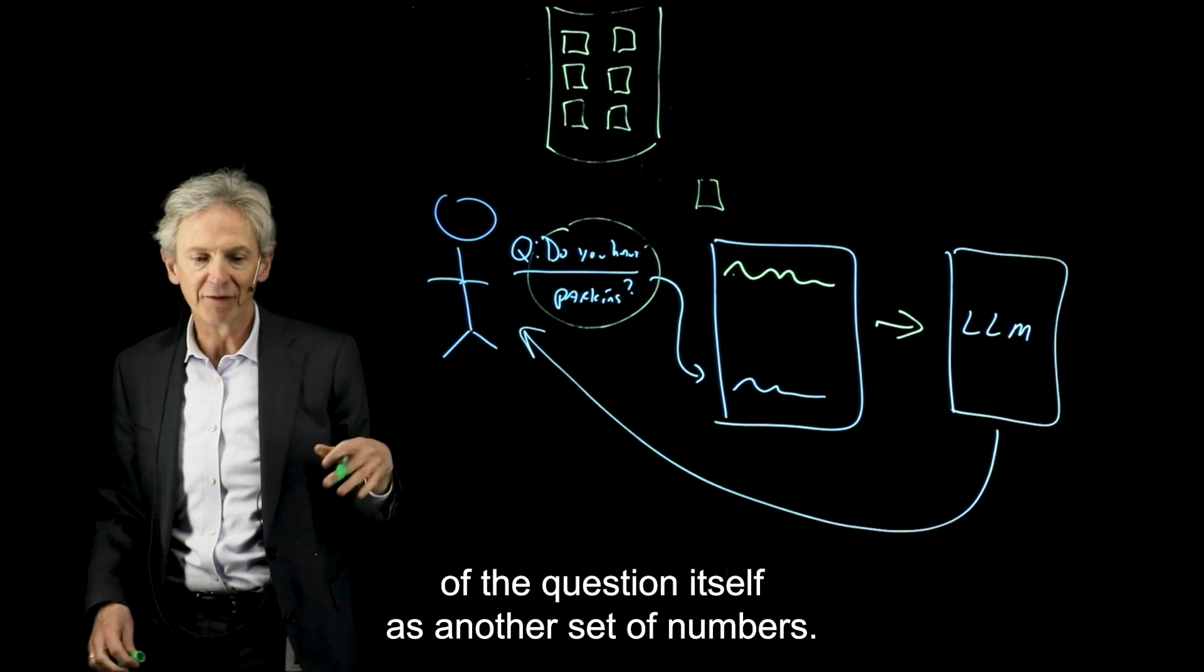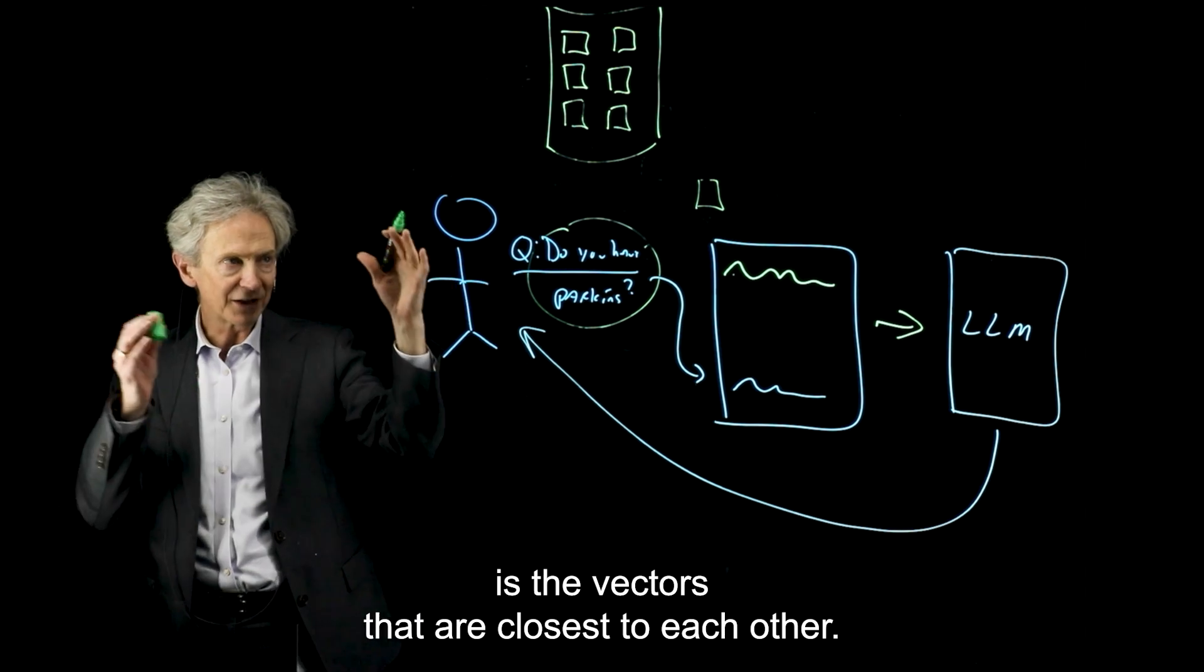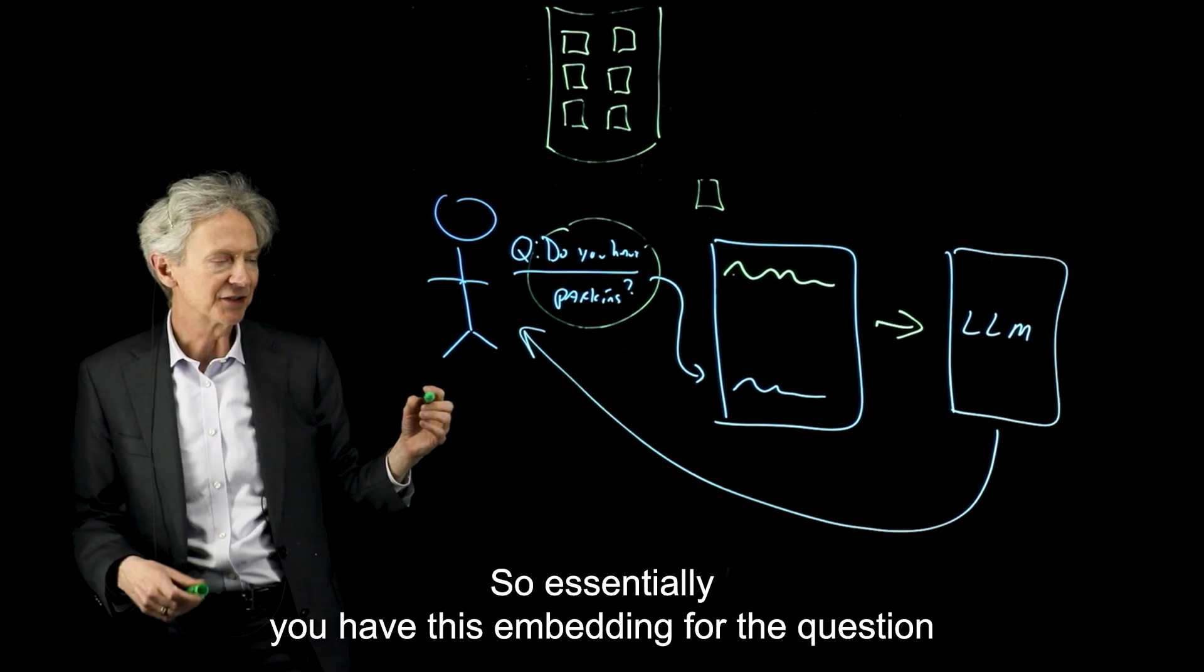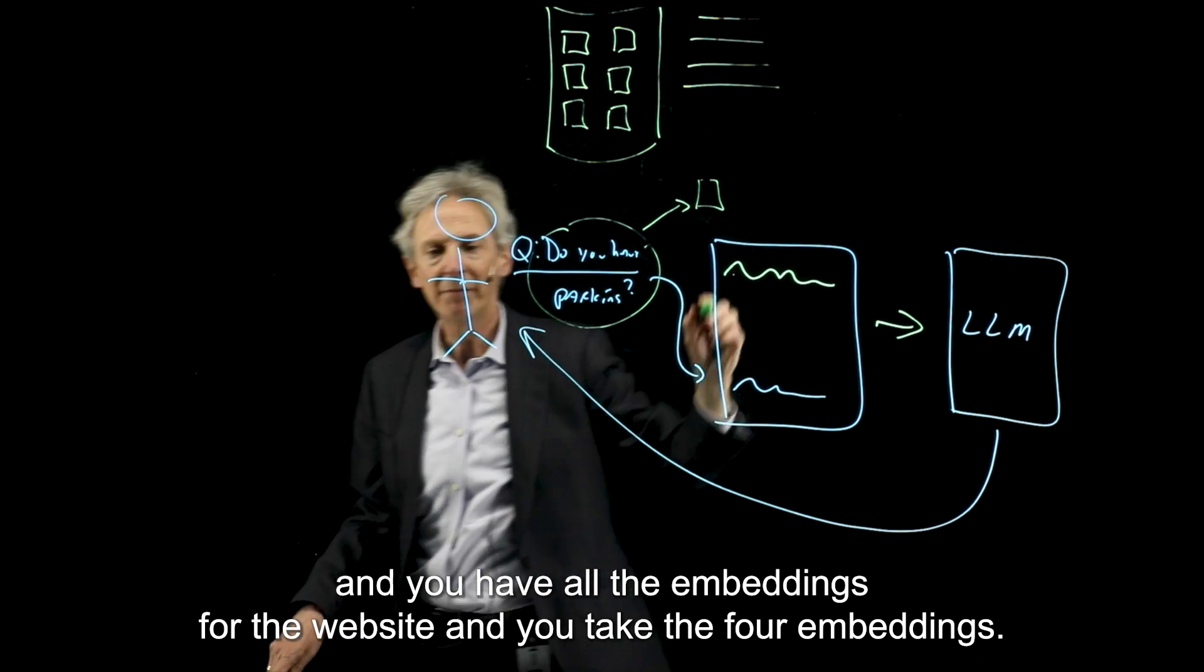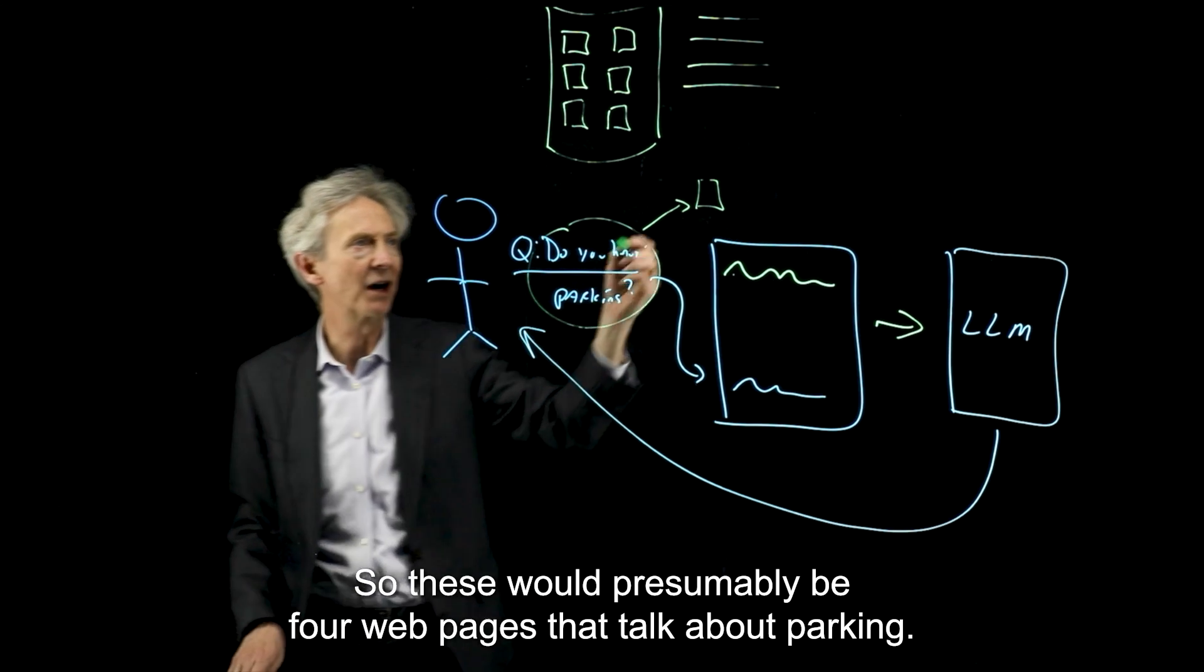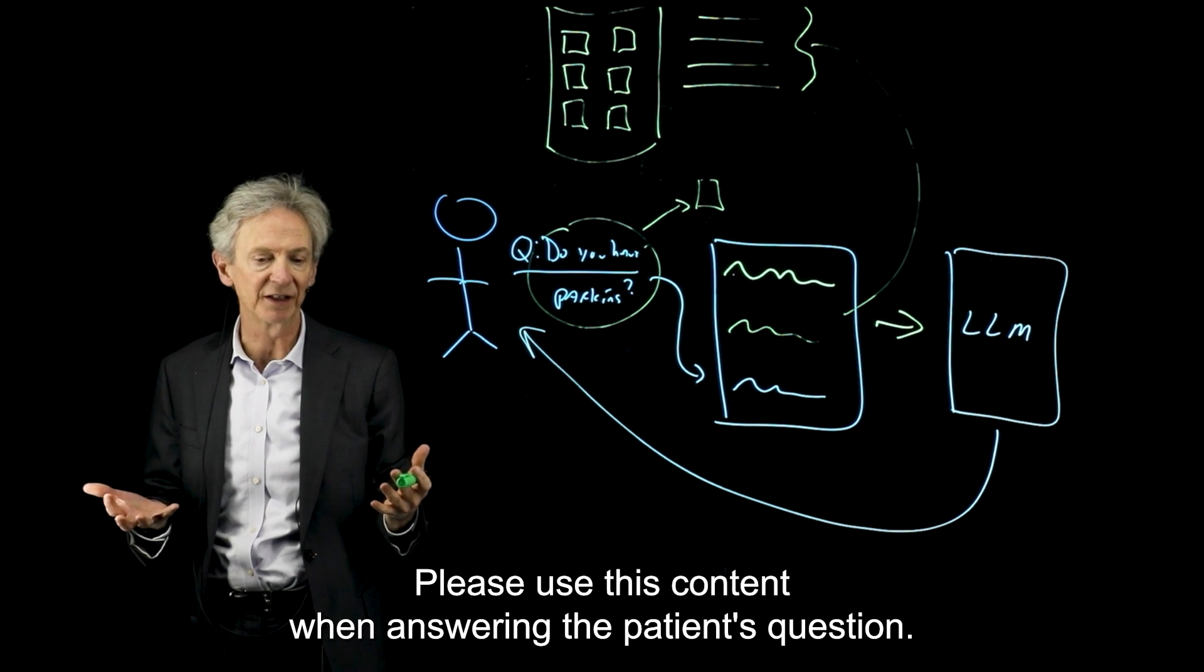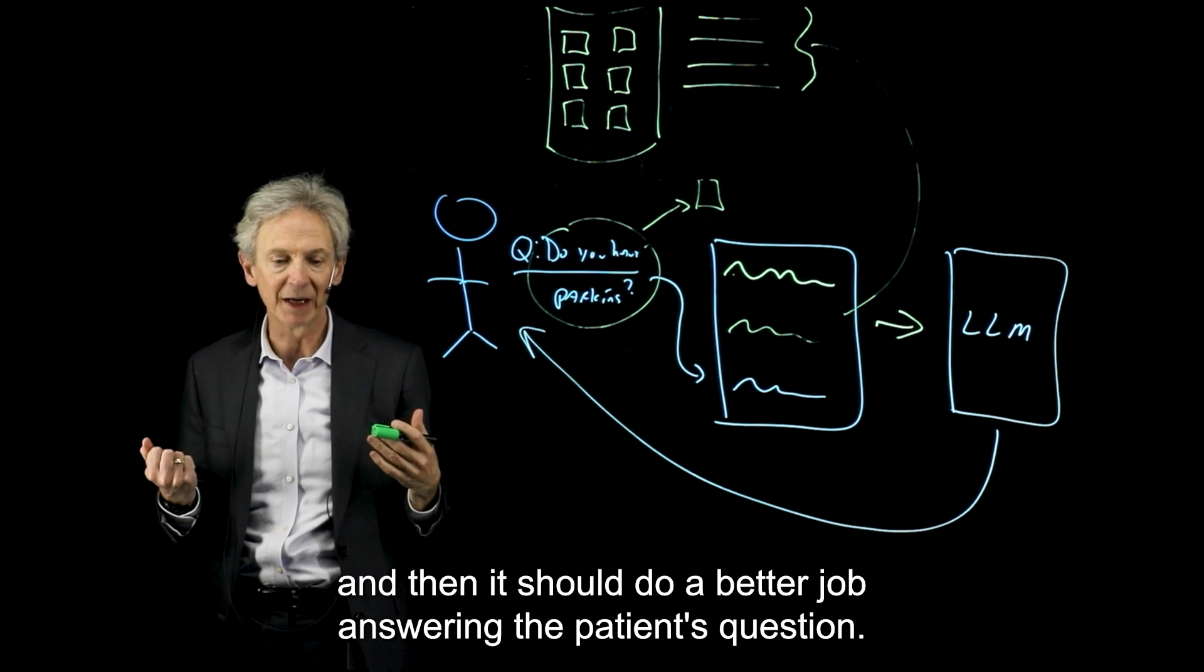So it's a list of numbers that represent the essence of that page. And then what you do is you create an embedding of the question itself as another set of numbers. And the way these numbers work, these vector embeddings, is the vectors that are closest to each other, and you can think about this like in math, the distance between two points, the vectors that are closest to each other have the same kind of essence. They're talking about the same things. So essentially you have this embedding for the question, and you have all the embeddings for the website, and you take the four embeddings, in my case, or the four web pages that have the closest vector to the question. So these would presumably be four web pages that talk about parking. You take the text of those web pages, and you stick it here inside the prompt, and you basically say, okay, here are your instructions. Please use this content when answering the patient's question. And here is the patient question. And you send that whole bundle to the large language model, and then it should do a better job answering the patient's question.